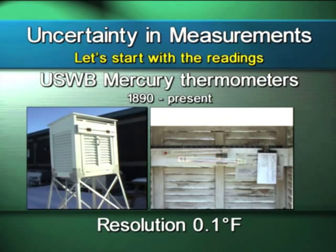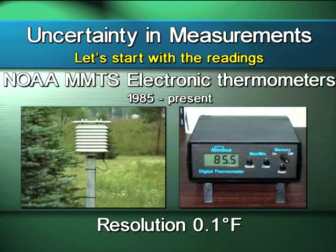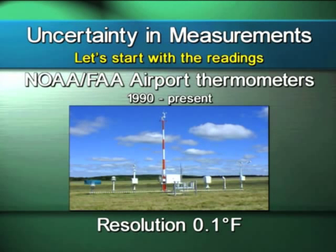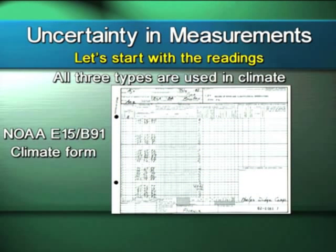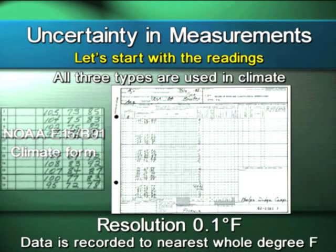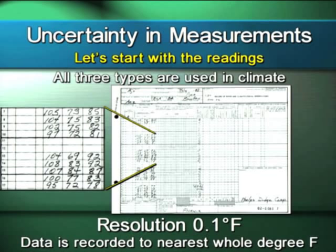Let's talk about the measurements themselves. There are three different kinds of measurements made with U.S. Weather Bureau Mercury Thermometers, going back to 1890 when the Weather Bureau was first formed. They all have a resolution of 0.1 degrees Fahrenheit. The MMTS, the newer electronic thermometer introduced around 1985, has that same resolution along with memory for highs and lows. And of course there are the airport weather stations — the ASOS and AWOS stations — which also have a resolution of 0.1.